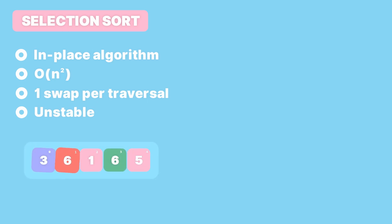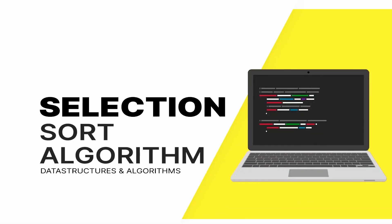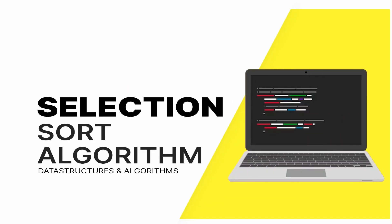For example, if we compare the red 6 with the largest element 3, eventually 6 becomes the new largest element. At the end of the traversal it will take the last position of the unsorted partition and end up in front of the green 6. So if you want an algorithm which is stable, selection sort might not be the best choice. This was it for the selection sort algorithm. Thank you for your time, and I'll see you in the next video.